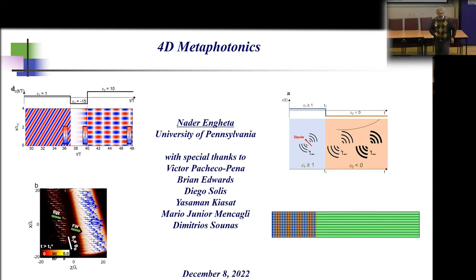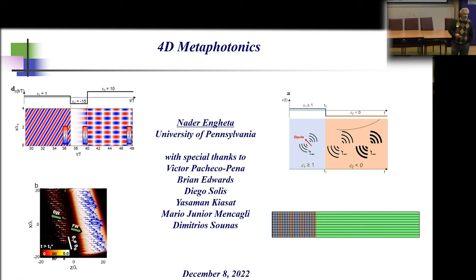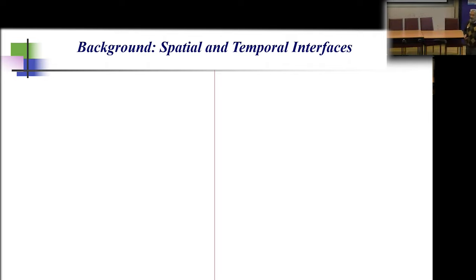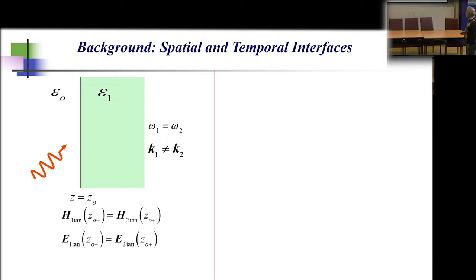Before I get to a specific topic, I'll show you four background slides. We'd like to deal with spatial interfaces and temporal interfaces. We are all familiar with the spatial interface — the simplest possible scattering problem in electromagnetics is the Fresnel problem.